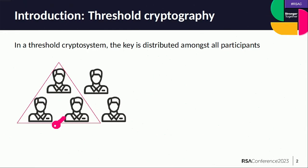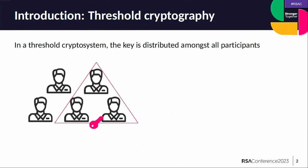So let's start with what threshold cryptography is, which is kind of the basics of this talk. In a threshold cryptosystem, you have a private key that is distributed amongst a group of people. Here we have five people, and they each have a share of the key. The benefit of threshold cryptography is that a certain number of people, whoever they are within this group, should be able to reconstitute the key. Here we have a 2-of-5 cryptosystem, so you'd need at least three people to reconstitute the key, but it can be any group of three people within the whole group.